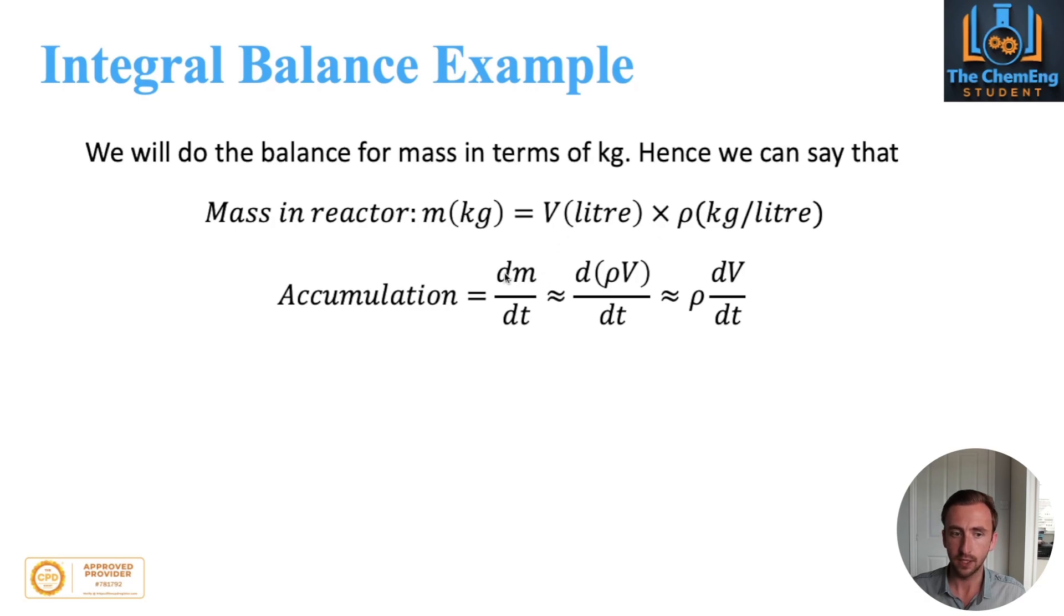but what we can say is that the mass given as m is going to be the volume multiplied by the density, which would be kilogram per liter. Now that means that we can re-express this as dm over dt, and we can express these as rho dv over dt.